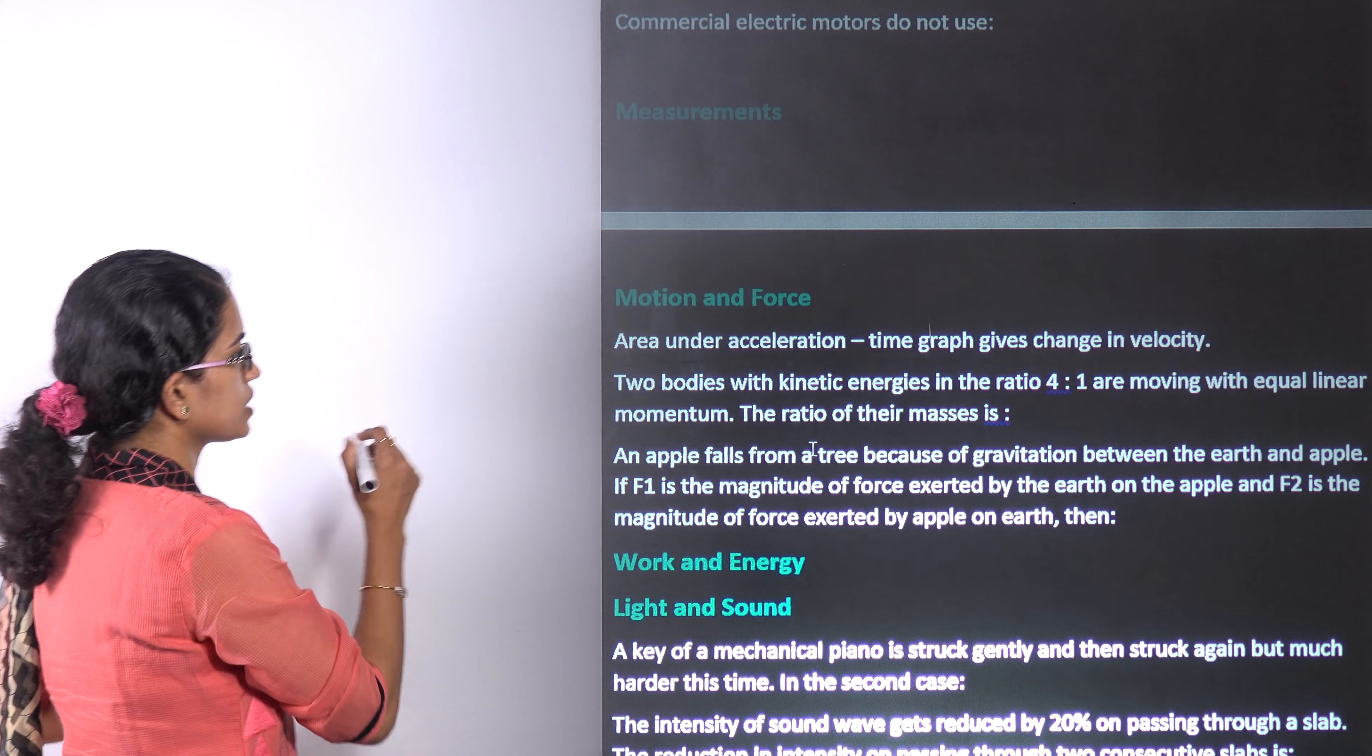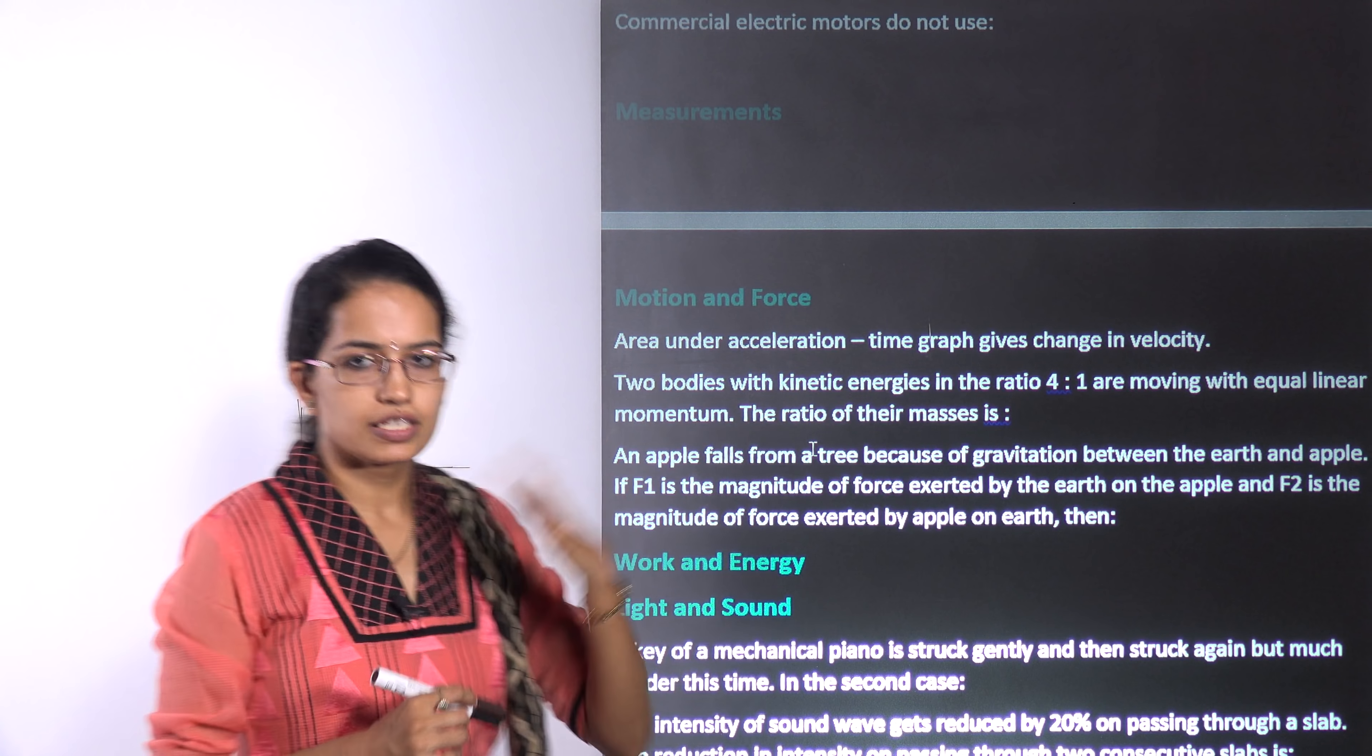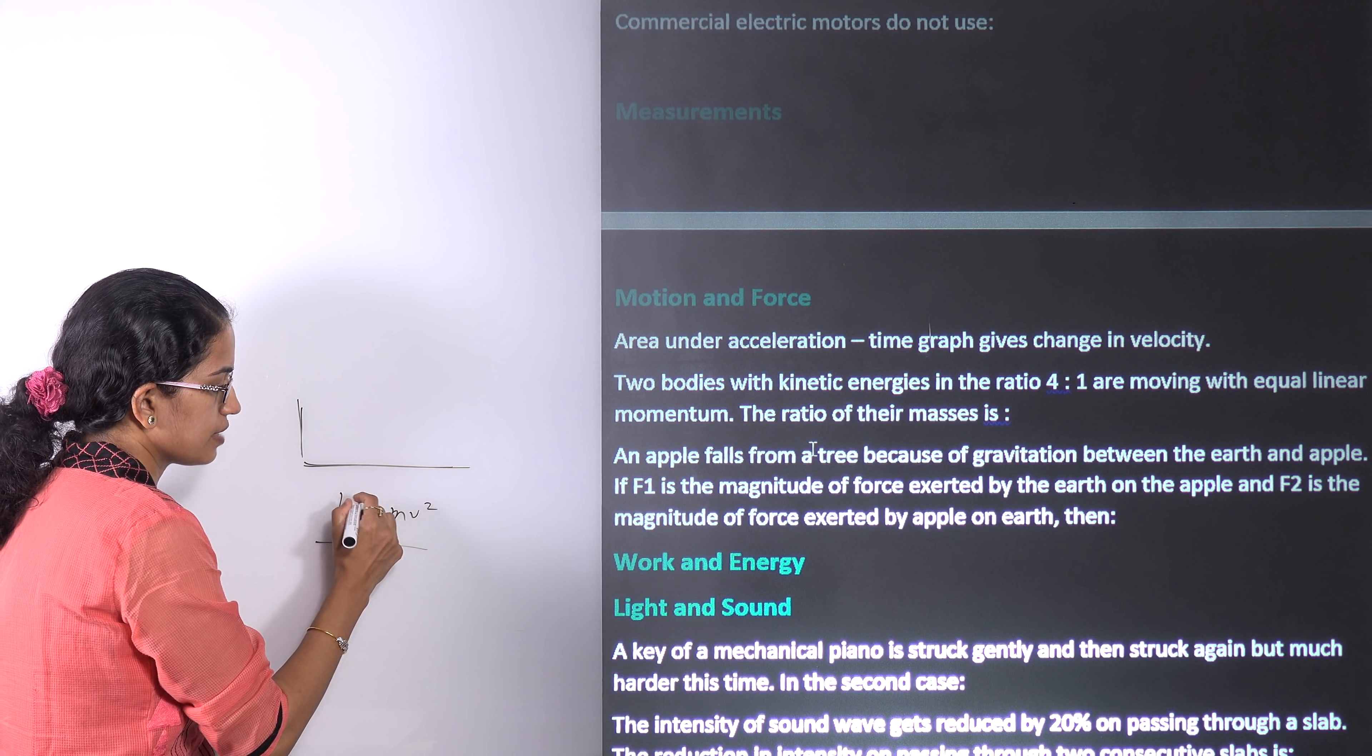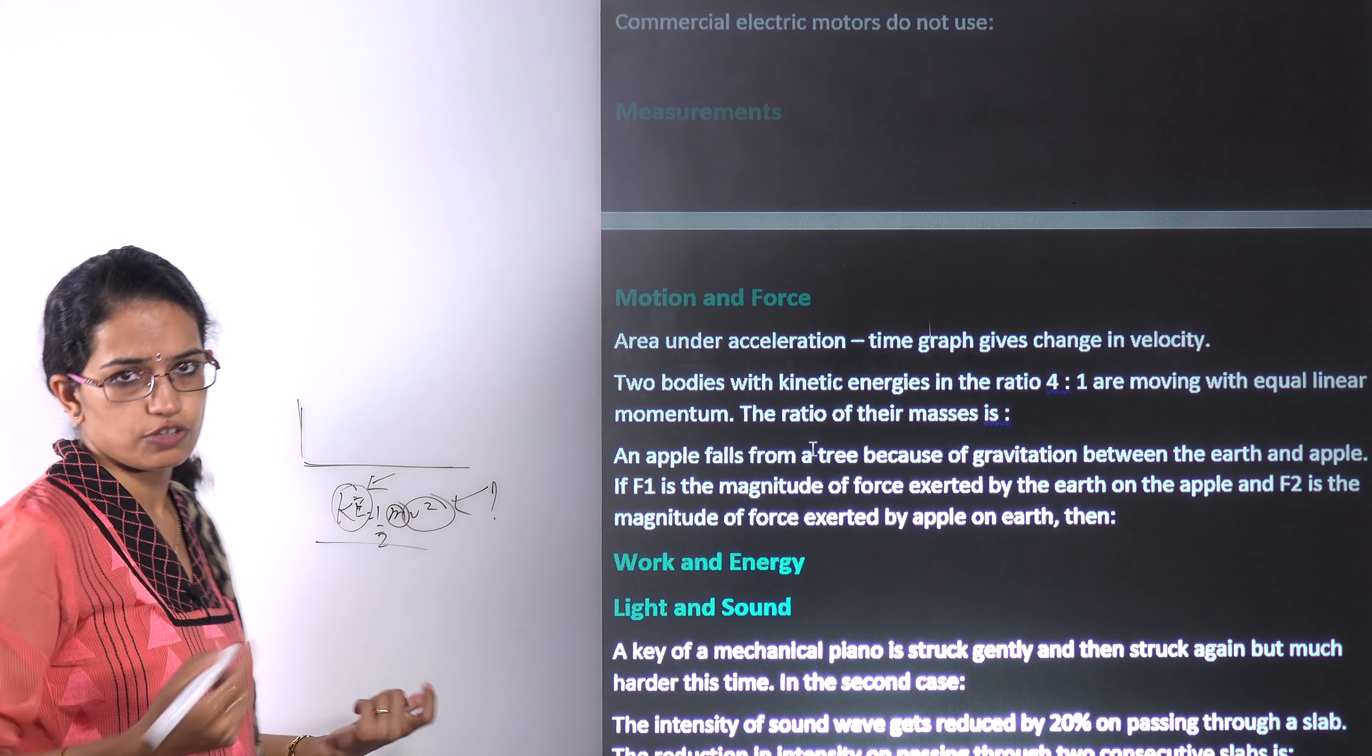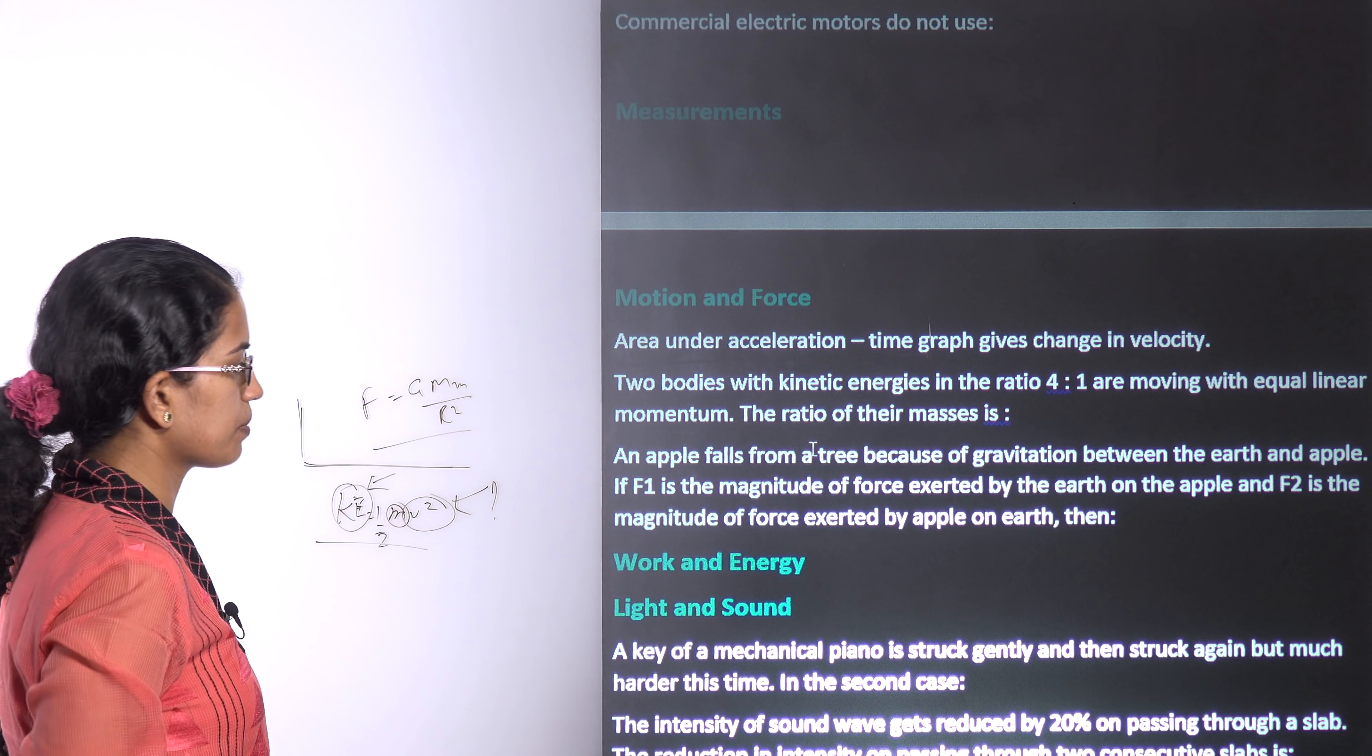For motion and force, a common question is finding out the area under the acceleration time graph, which basically works around with the changes in velocity. Then you have various bodies that are given, the ratio of the bodies are given. So what you need to know is a simple formula for kinetic energy. If you have the masses, the proportion of the masses that are known, the ratio of the kinetic energy is known, you might be asked to find the ratio of velocities or masses. The basic standard formulas you must be very clear of and those should be on your tips. Similarly, you have the formula for gravitational force.